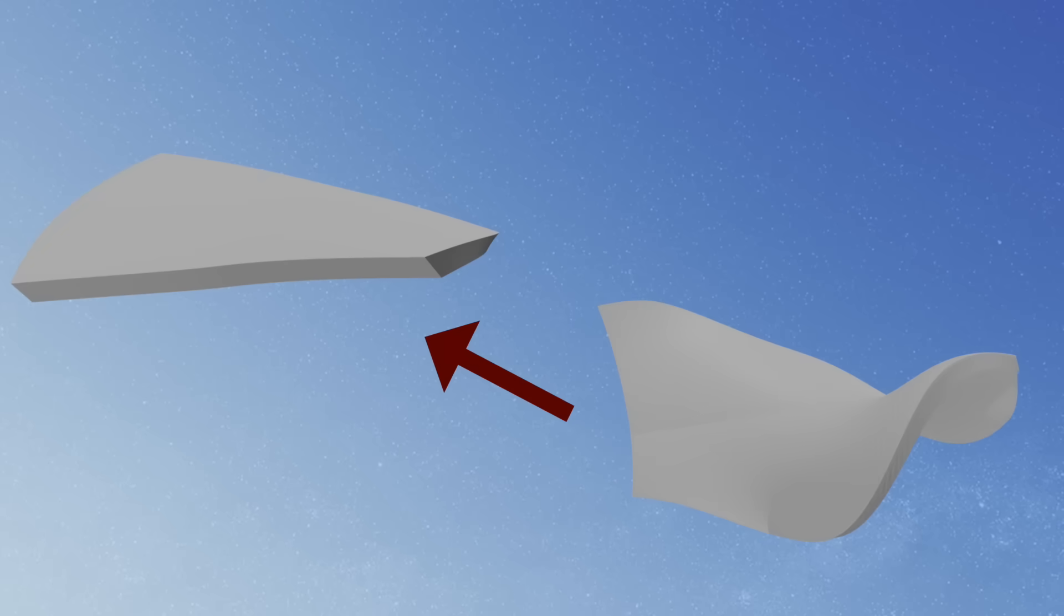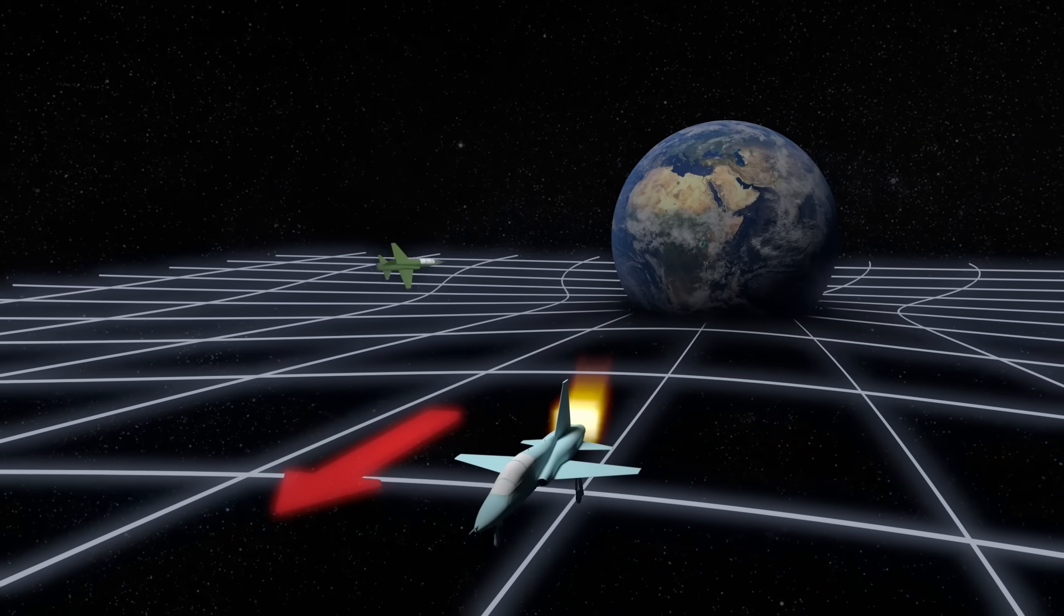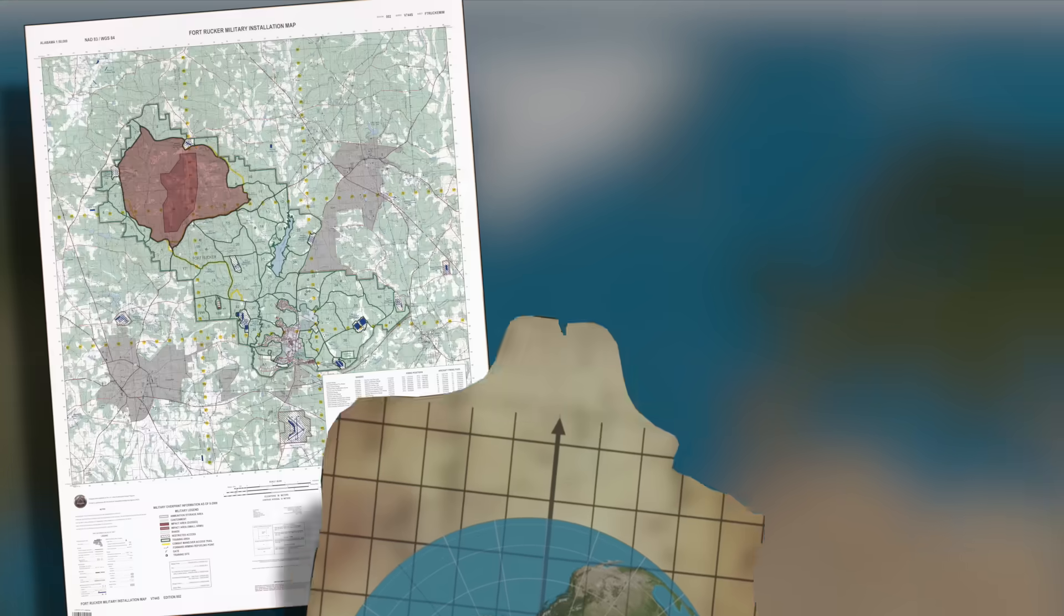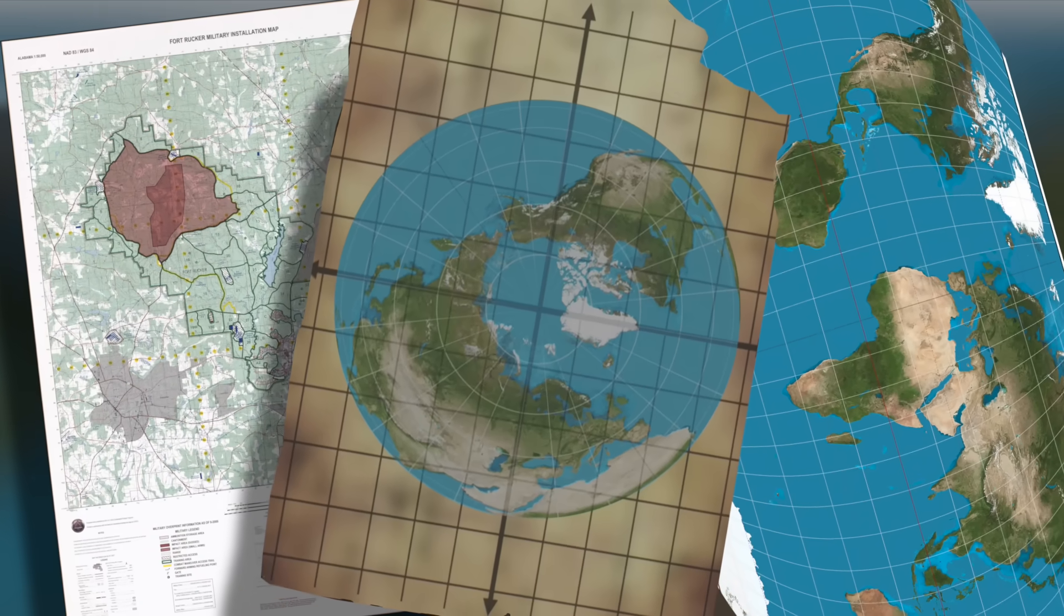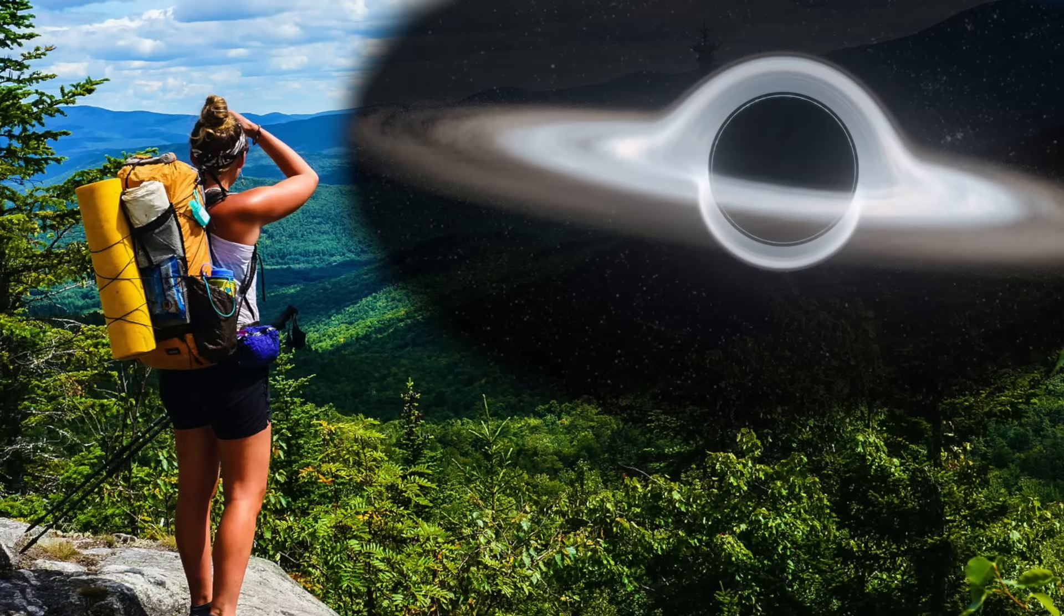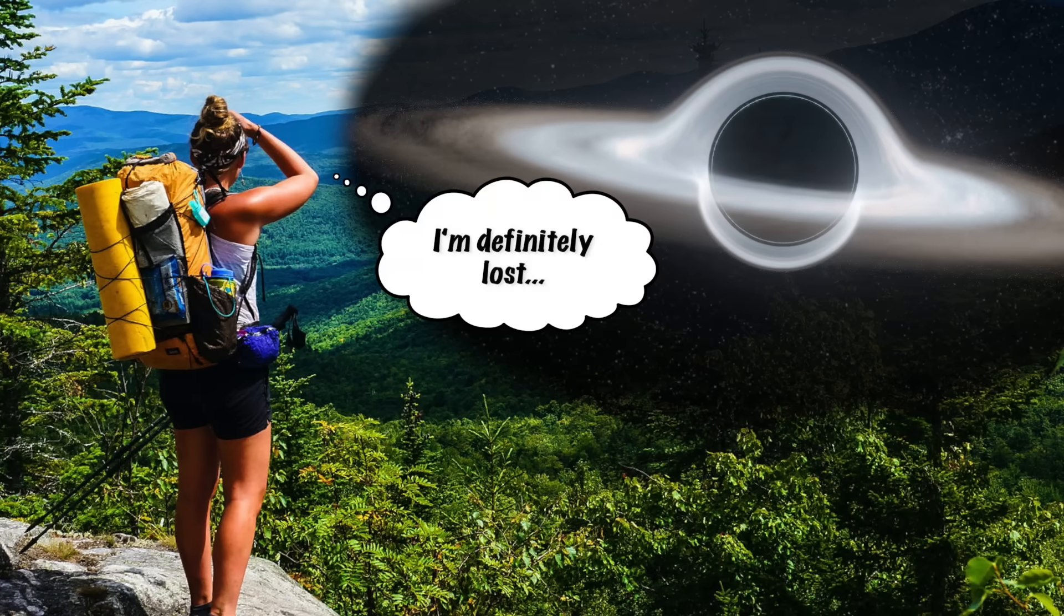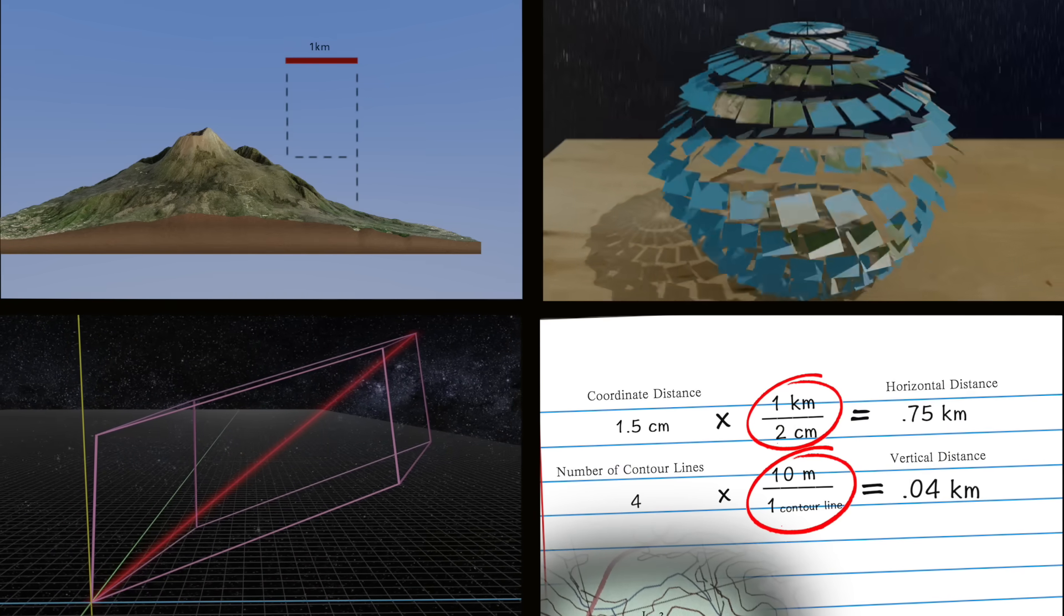The trick to understanding general relativity then is to realize that not all maps are two-dimensional pieces of paper you can hold in your hand. So if you're planning on taking a hike through, say, a black hole, you're going to need something of a four-dimensional map. But more on that in future videos. This has been Dialect. Thanks for watching.